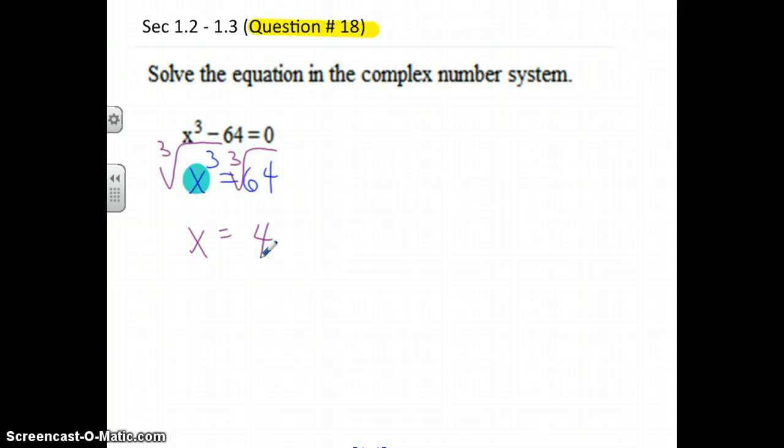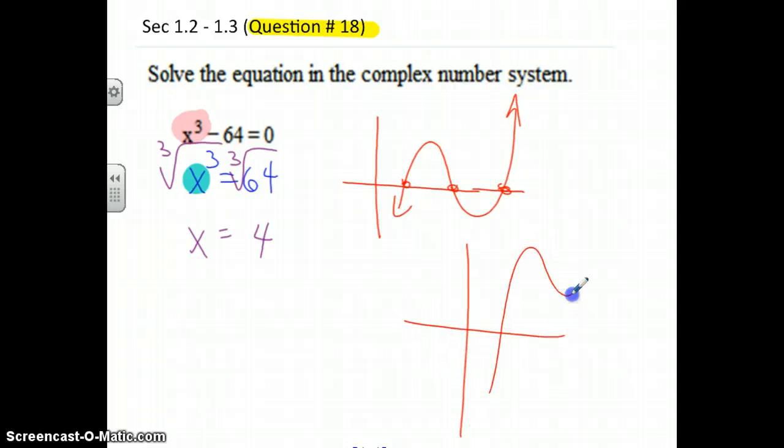If you take the even root you have to say plus or minus, but if it's the odd root there's only one solution. But because this is x cubed, you know that there should be three solutions and all three solutions may not be real. In other words, they might not cross the x-axis. One might cross the x-axis but the other two might be imaginary solutions.